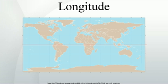Note that longitude is singular at the poles, and calculations that are sufficiently accurate for other positions may be inaccurate at or near the poles. Also, the discontinuity at the ±180° meridian must be handled with care in calculations. An example is a calculation of east-west displacement by subtracting two longitudes, which gives the wrong answer if the two positions are on either side of this meridian. To avoid these complexities, consider replacing latitude and longitude with another horizontal position representation in calculation.